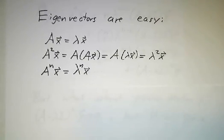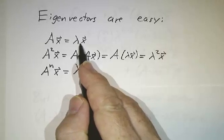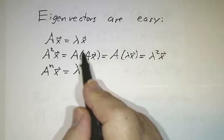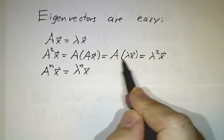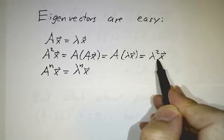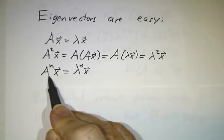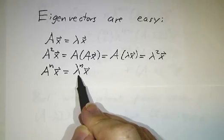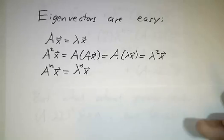So for A to the n, eigenvectors are very easy. If Ax is lambda x, well A squared x is A times Ax, that's A times lambda x, and it multiplies by lambda a second time. Every time you hit it with A, you multiply by lambda. You hit it with A n times, you multiply by lambda n times. Piece of cake.